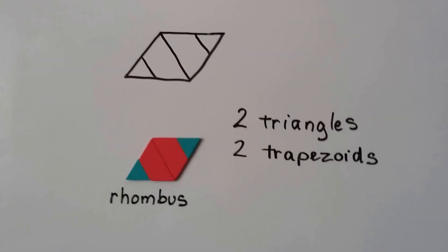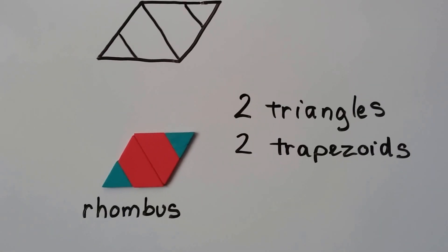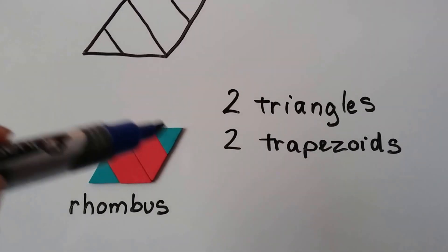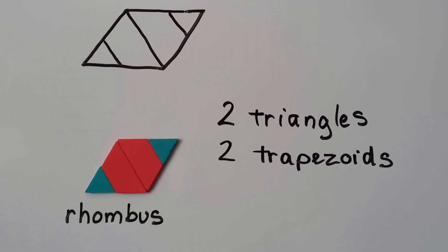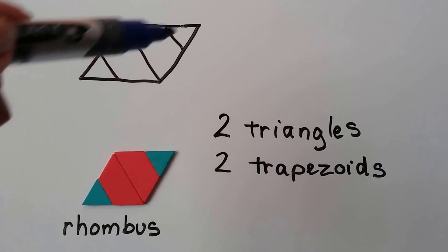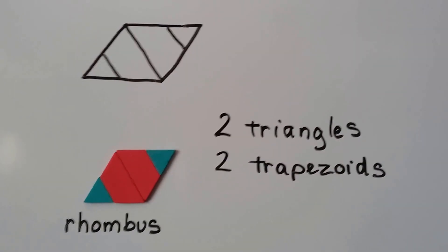Here I took two triangles and two trapezoids and made a rhombus. You can see the two triangles and you can see the two trapezoids because they're different colors. And when I laid them like this, it made a rhombus.